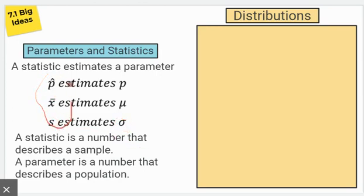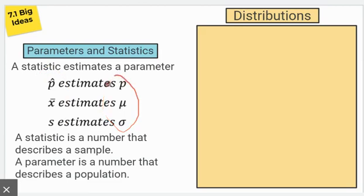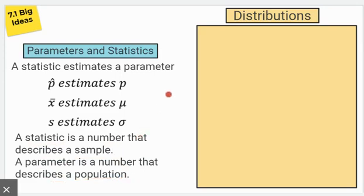You need to be using the proper notation and proper symbols when you're talking about statistics, and use the proper symbols when talking about parameters. A statistic is a number that describes a sample, but a parameter is a number that describes a population. So we collect samples, take sample statistics, and use them to estimate population parameters.